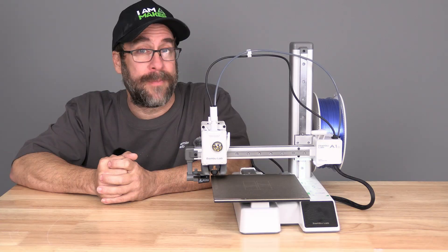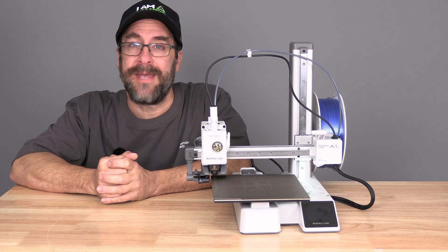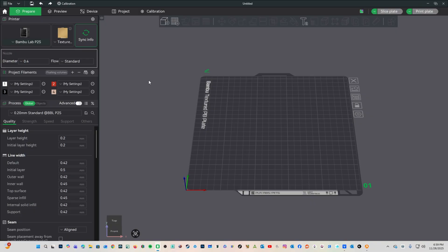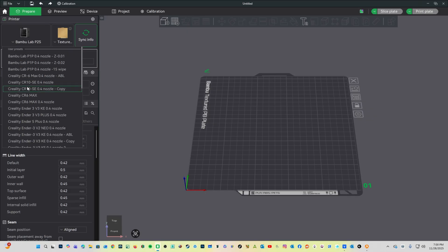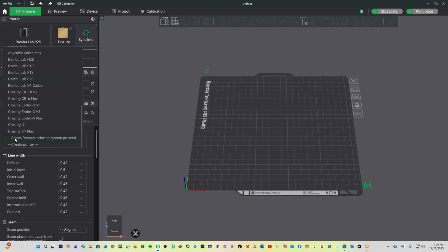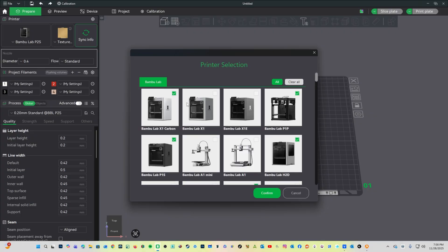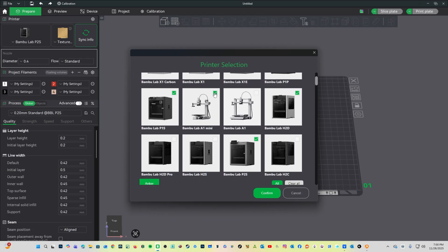We will pop over to Bambu Studio to set up the A1 Mini. Here in Bambu Studio, we will enter the Prepare screen. You will need to add your A1 printer to your collection in Bambu Studio. To do that, underneath Printer, click on this pull down, scroll to the bottom, and choose Select Remove Printers. On the following pop-up, look for the A1 Mini and check the box. Press Confirm.